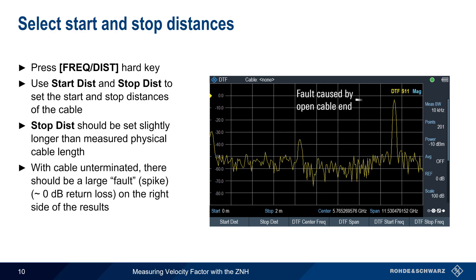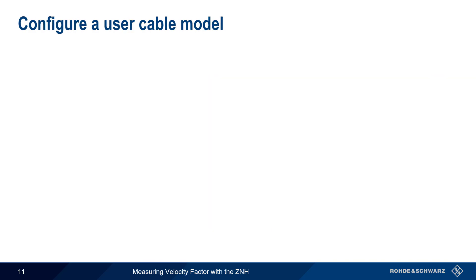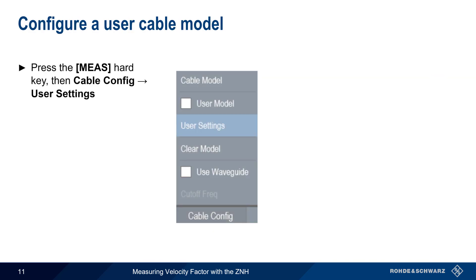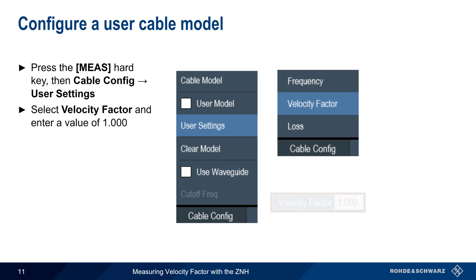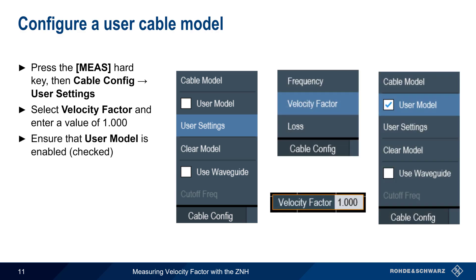If we leave the cable un-terminated, a large fault or spike with close to 0 dB of return loss will be seen on the right side of the results. This peak corresponds to the end of the attached cable. We next need to configure a user-defined cable model by pressing the Measure hard key, then Cable Config User Settings. Select Velocity Factor and enter a value of 1. Be sure that the user model is enabled, that is checked, before exiting this menu.